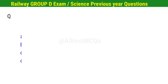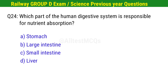Question No. 24. Which part of the human digestive system is responsible for nutrient absorption? Correct option is C. Small intestine.